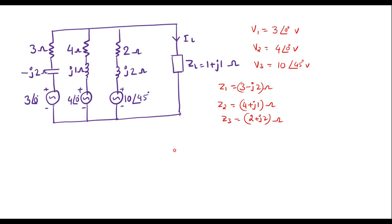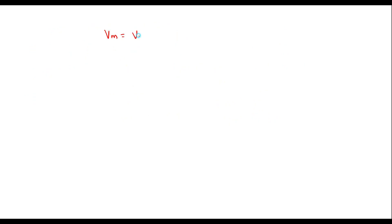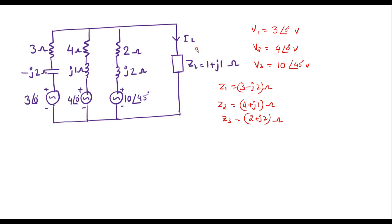We know that in Millman's theorem, we have to calculate Millman's voltage. Millman's voltage is represented by Vm, which is given by V1·Y1 plus V2·Y2 plus V3·Y3 divided by Y1 plus Y2 plus Y3. Here Y1, Y2, Y3 are the admittances, that is nothing but the reciprocals: Y1 is 1 over Z1, Y2 is 1 over Z2, and Y3 is 1 over Z3. So Y1 is (3 minus J2) inverse and Y2 is (4 plus J1) inverse.